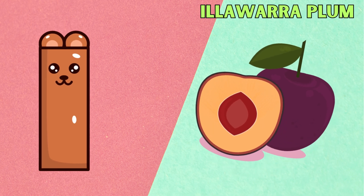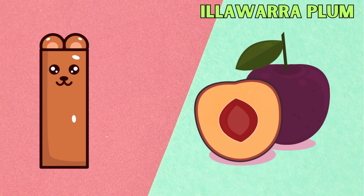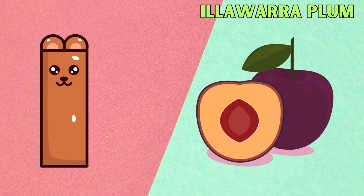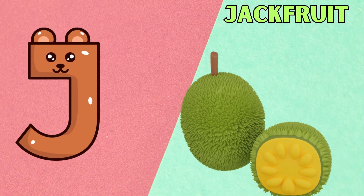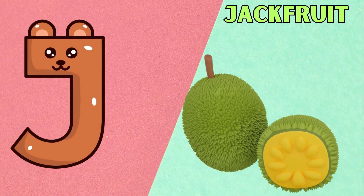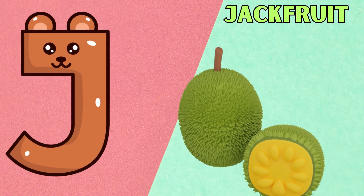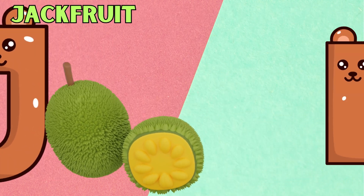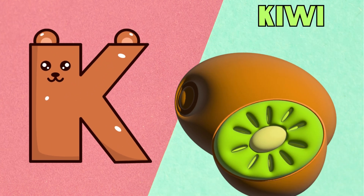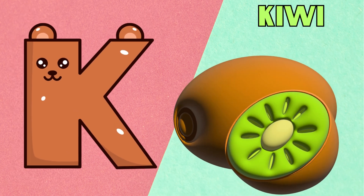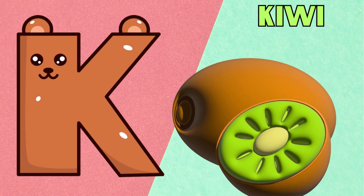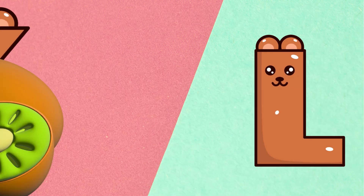I is for Illawarra Plum. I, I, Illawarra Plum. J is for Jackfruit. J, J, Jackfruit. K is for Kiwi. K, K, Kiwi.